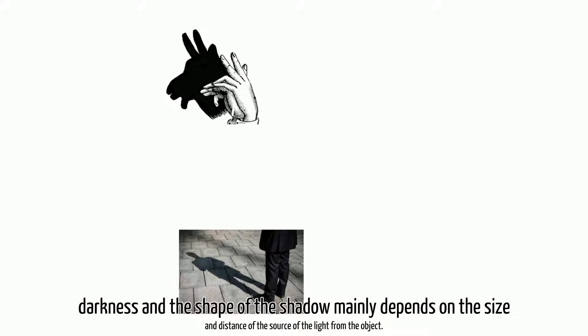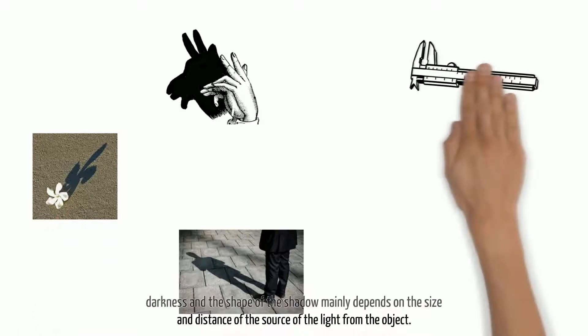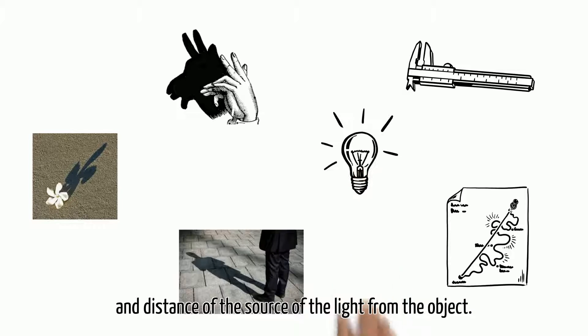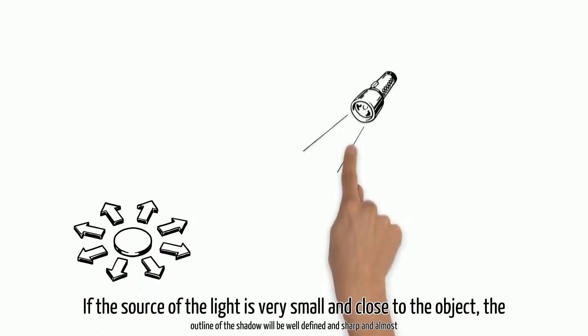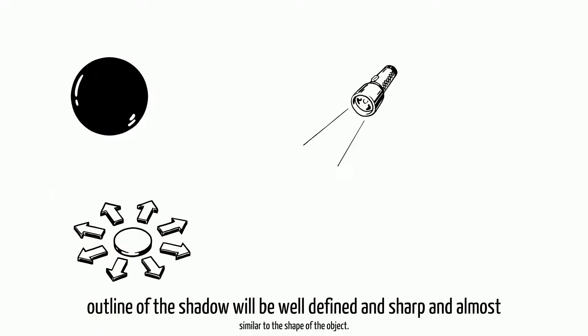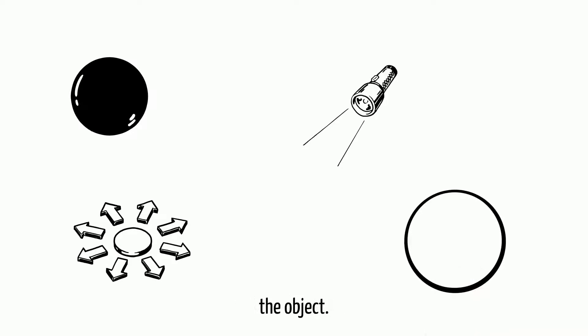The darkness and the shape of the shadow mainly depends on the size and distance of the source of the light from the object. If the source of the light is very small and close to the object, the outline of the shadow will be well defined and sharp and almost similar to the shape of the object.